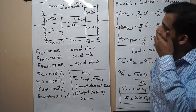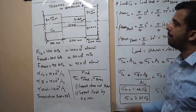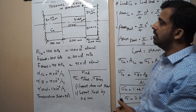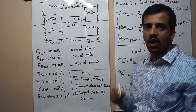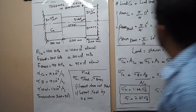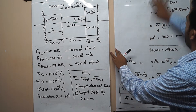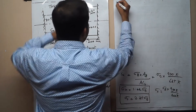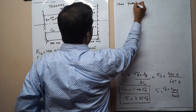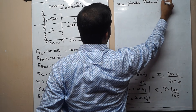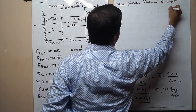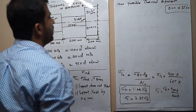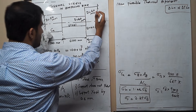This is a thermal stress problem. We now find the maximum possible thermal expansion within the fixed supports. The equation for thermal expansion is δL = α × ΔT × L. Using this equation, I will find the net elongation that would occur within the supports.